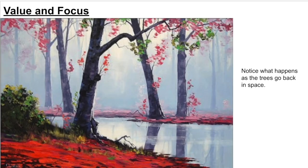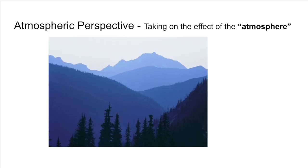Value and focus — notice what happens as the trees go back in space. The ones closer are darker with more detail, and they fade as they go back. Atmospheric perspective is the effect of taking on atmosphere, and this is a great example with these mountains going back in space.